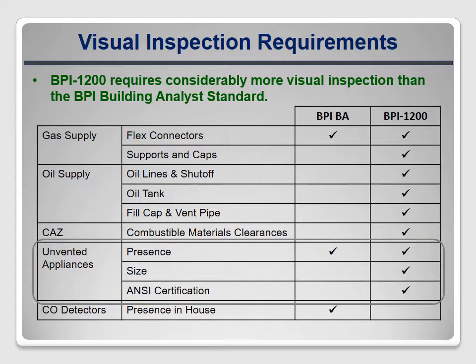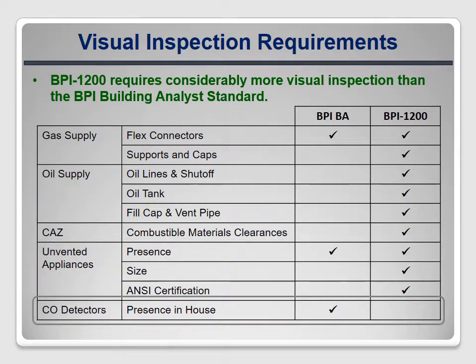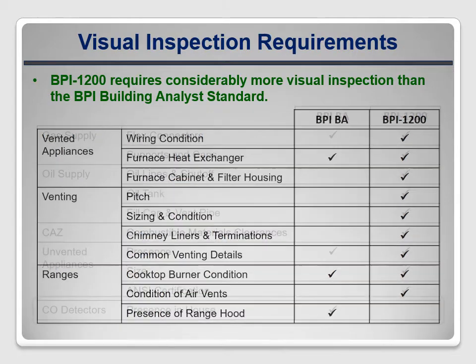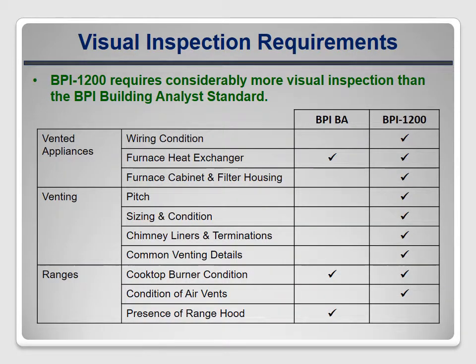On the other hand, the BA Standard requires that the house be inspected for the presence of carbon monoxide detectors, and this is not included in BPI 1200. BPI 1200 requires an assessment of vented appliance wiring, as well as heat exchangers, cabinets, and filter housings on forced air heating systems, while the BA Standard only requires a heat exchanger inspection.